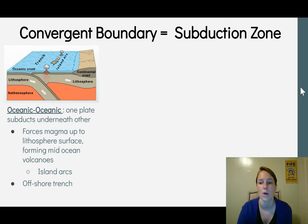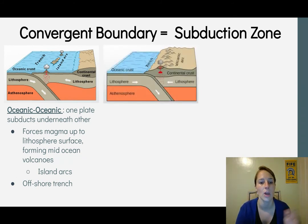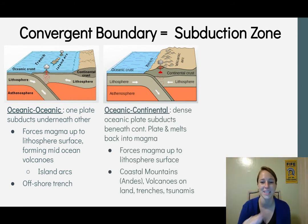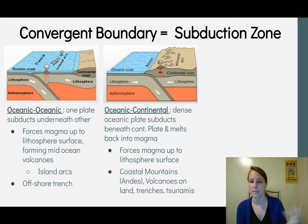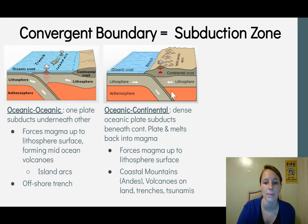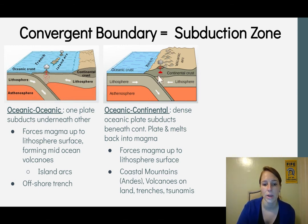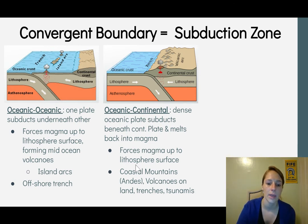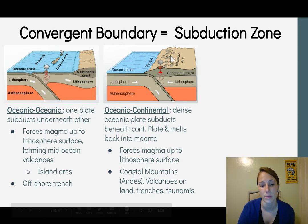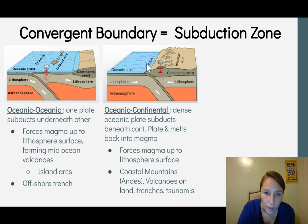When an oceanic plate meets a continental plate, the oceanic plate is more dense and sinks in the subduction zone. As it goes down, it melts into magma, and some magma is forced up, leading to coastal mountains such as the Andes or the Cascades and Olympics here in Washington. Volcanoes, trenches, and tsunamis can also potentially occur at this boundary.